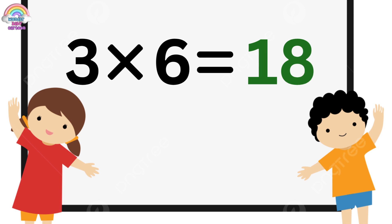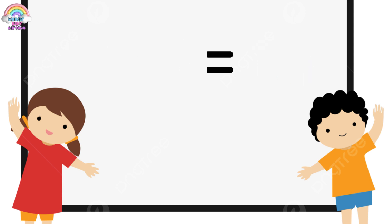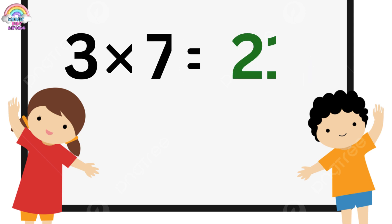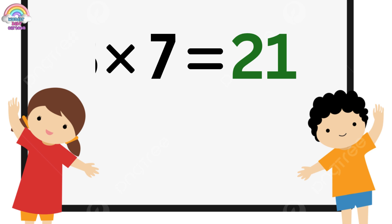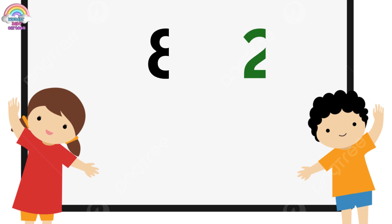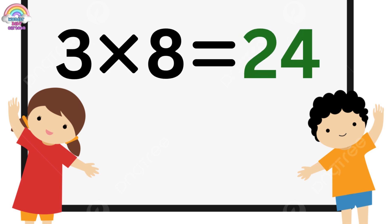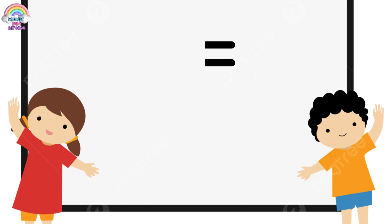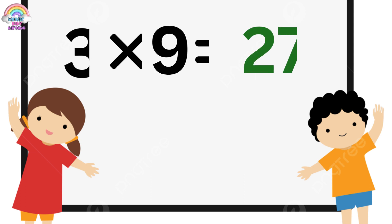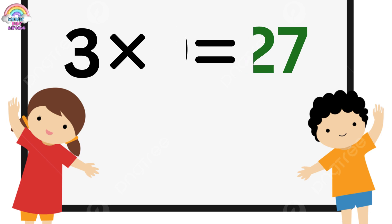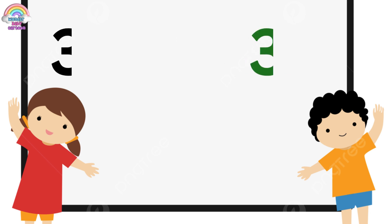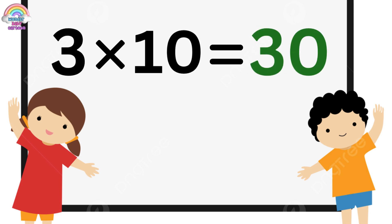Three sixs are eighteen. Three sevens are twenty-one. Three eights are twenty-four. Three nines are twenty-seven. Three tens are thirty.